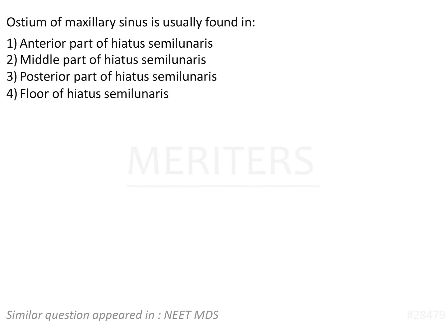The ostium of the maxillary sinus is usually found in which location? The options are: anterior part of the hiatus semilunaris, middle part of the hiatus semilunaris, posterior part of the hiatus semilunaris, and floor of the hiatus semilunaris.